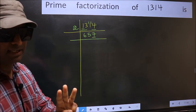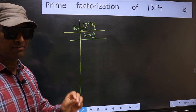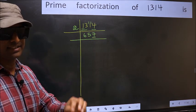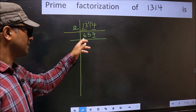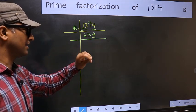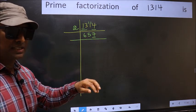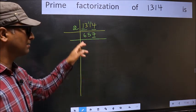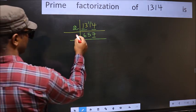Next prime number is 3. To check divisibility by 3, we should add the digits. What I mean is 6 plus 5 plus 7. We get 18. 18 is divisible by 3, so this number is also divisible by 3. So we take 3 here.